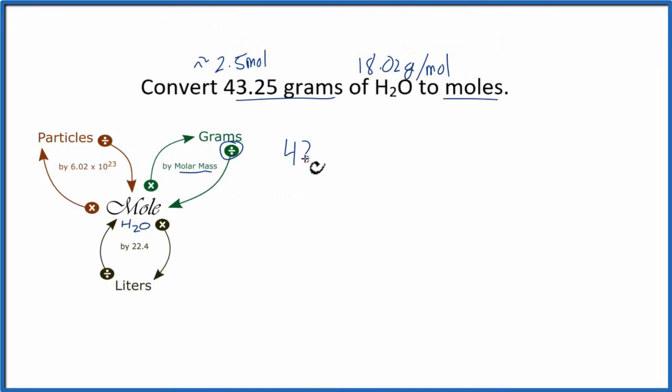We have 43.25 grams of water and we're going to divide by the molar mass, which is 18.02 grams per mole. We divide the top by the bottom. We end up with 2.40 grams. Grams cancel out. We're left with moles of H2O, which is what we're looking for. And 2.40, that's pretty close to our estimate. So we can be pretty comfortable with this solution.